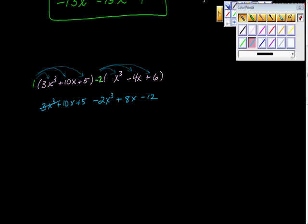So we have 3x³ here, negative 2x³ here. That gives us 1x³, or x³. We have 10x here, 8x there for a total of 18x. And it's 5 plus negative 12, that's negative 7. So there's our answer.